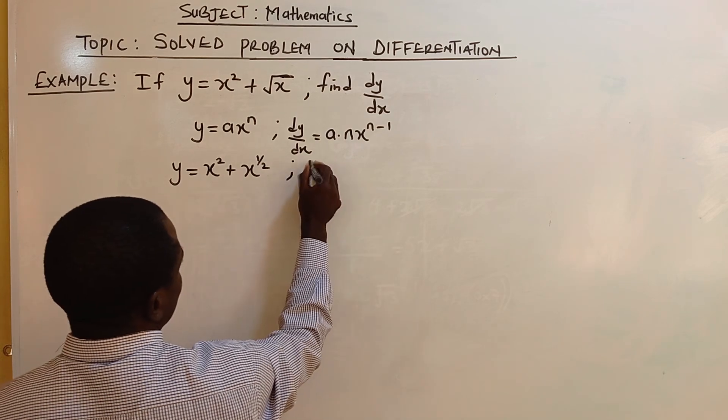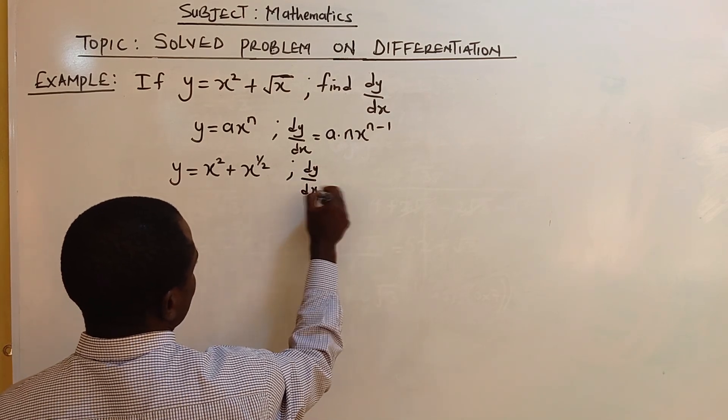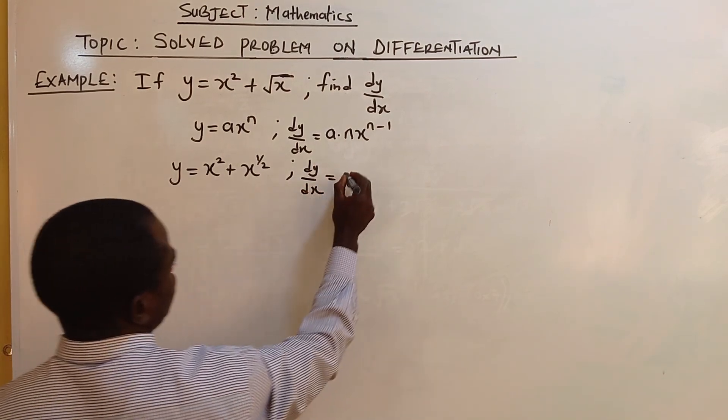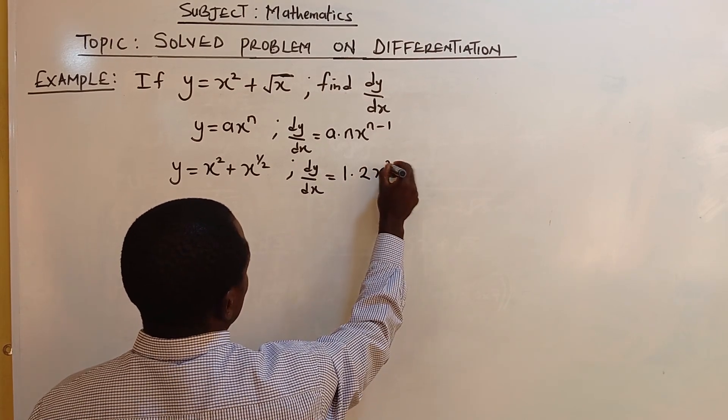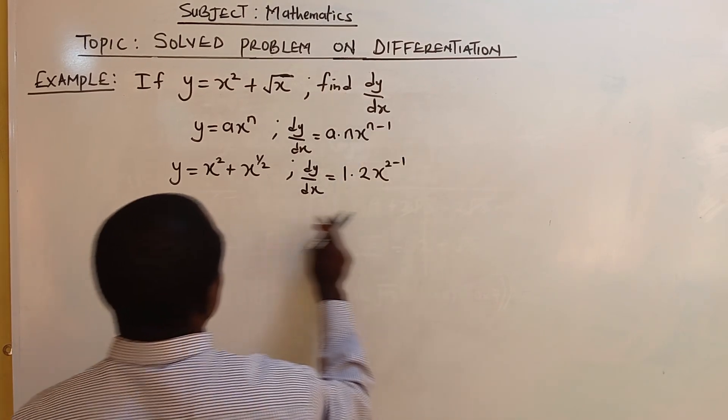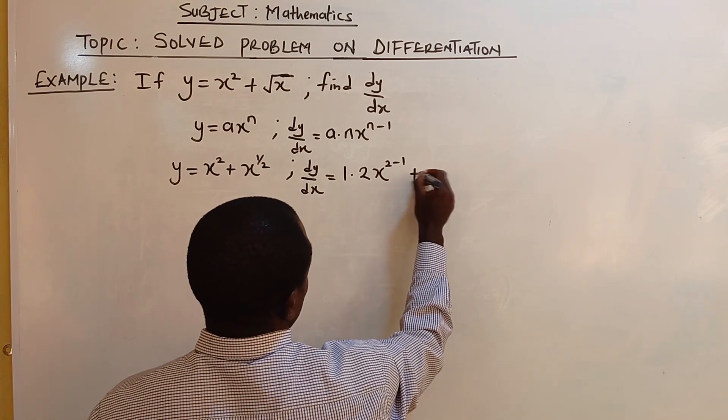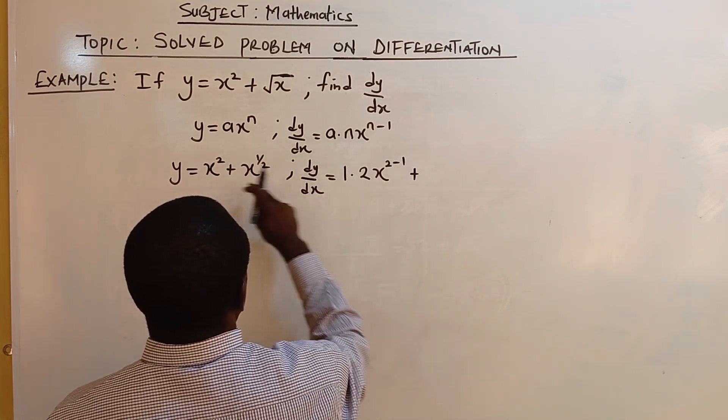Now let's differentiate it. dy/dx equals there's 1 at the front, 1 multiplied by 2, x to 2 minus 1. We apply this, plus half.